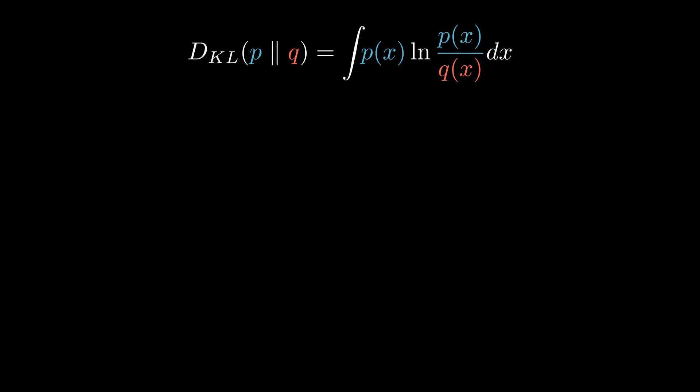Kullback-Leibler divergence is a statistical distance that measures how much a model distribution Q differs from the true distribution P. In this video, we will look at one way to arrive at this formula, but first, let's present it in a graphical way.